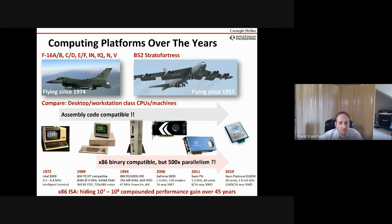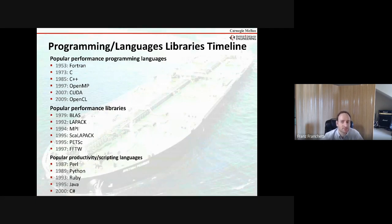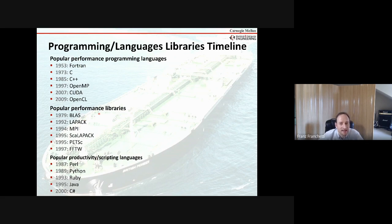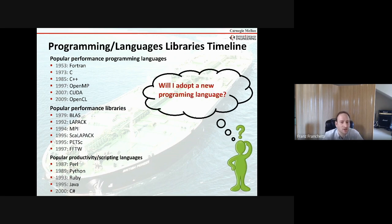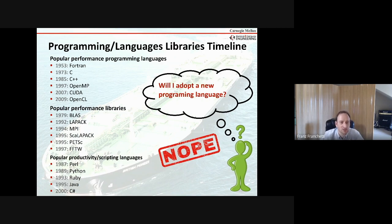From the programming languages perspective: Fortran from 1953 is still happily used; C# from 2000 and Python from 1989 are the hot new things. FFTW and BLAS go back to '79 to '97. So if you ask someone whether they'll adopt a new programming language, the most likely answer is no — programmers just don't want change. They want to write single-threaded C or C++ code and let the compiler do the rest, and that's been a hard problem.